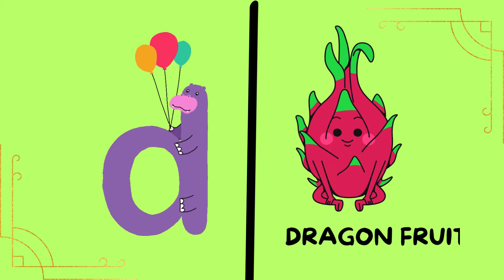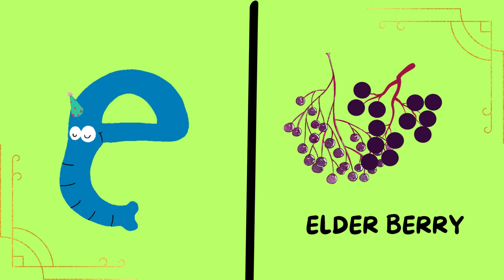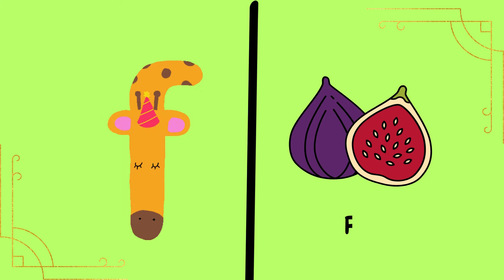D is for dragon fruit. D is for dragon fruit. E is for elderberry. E is for elderberry. F is for fig. F is for fig.